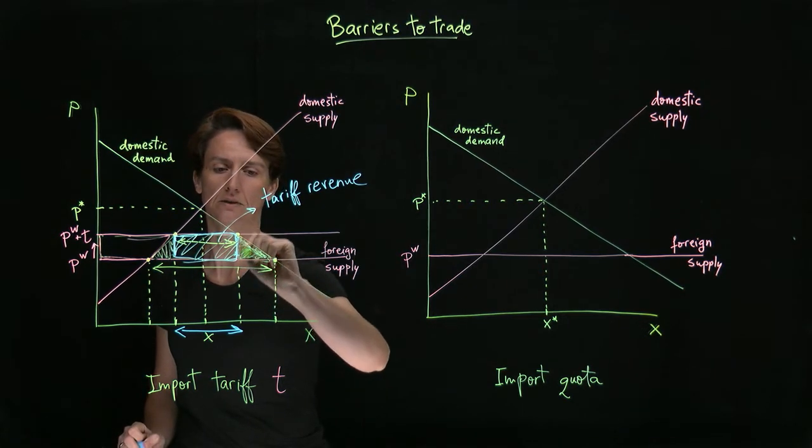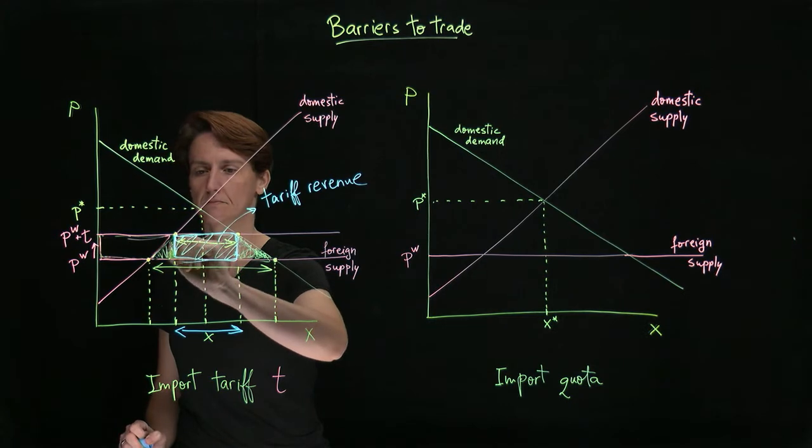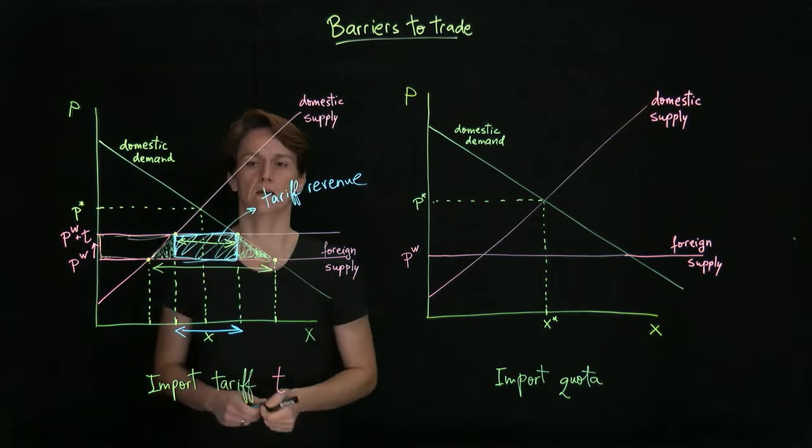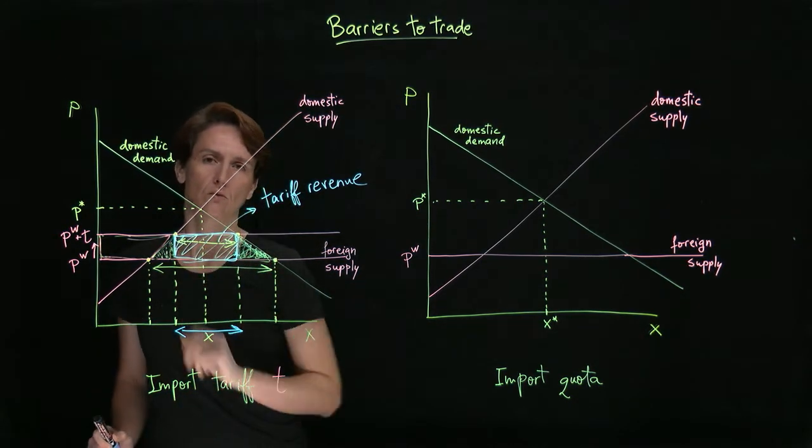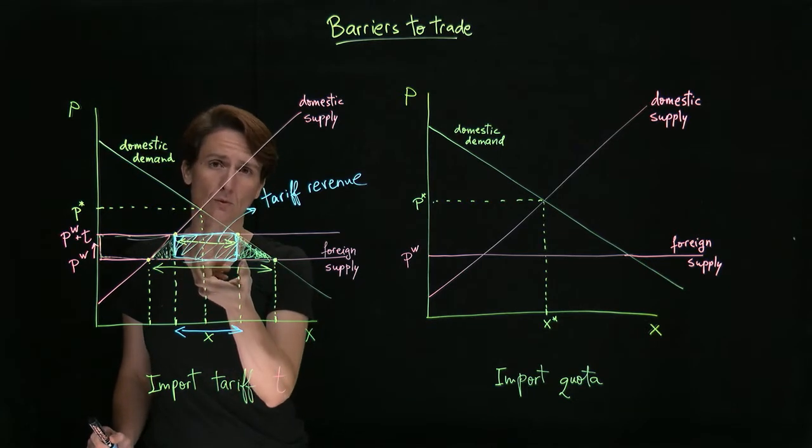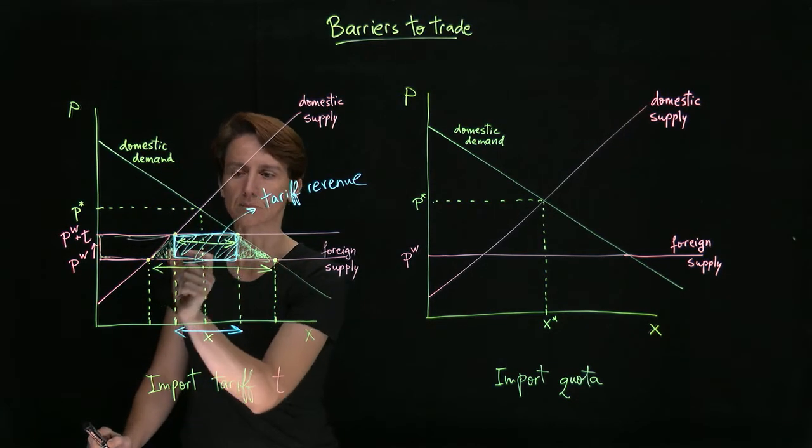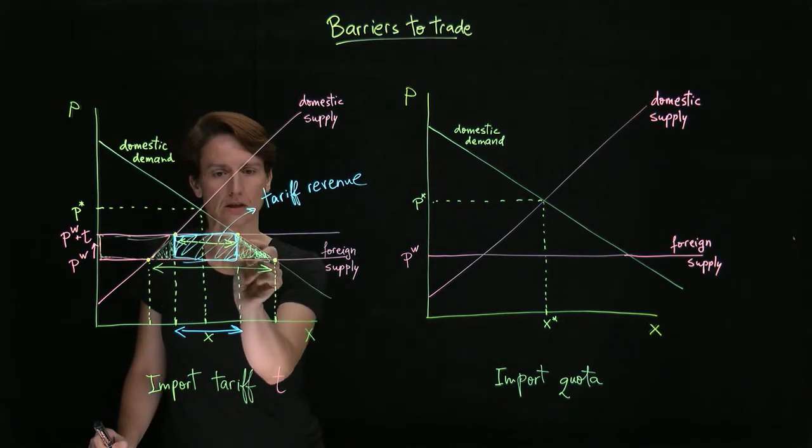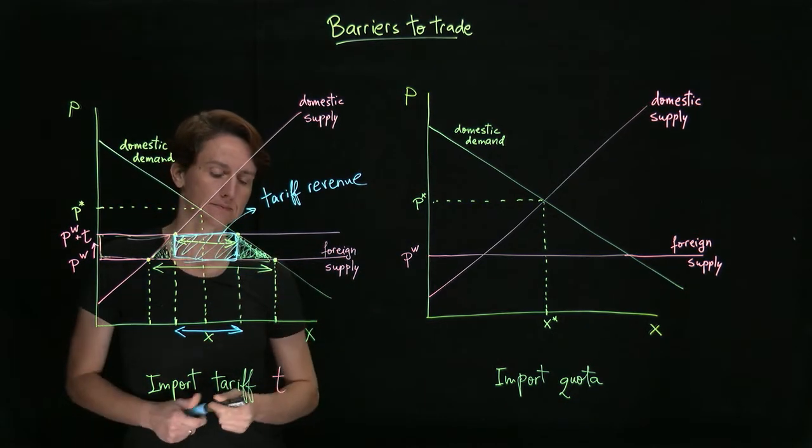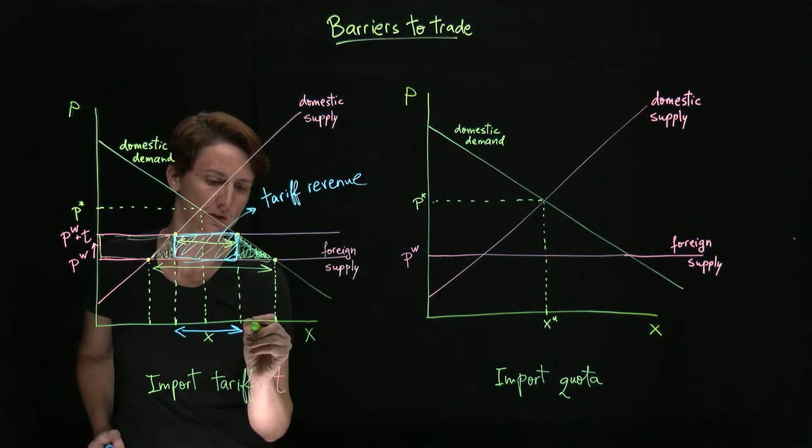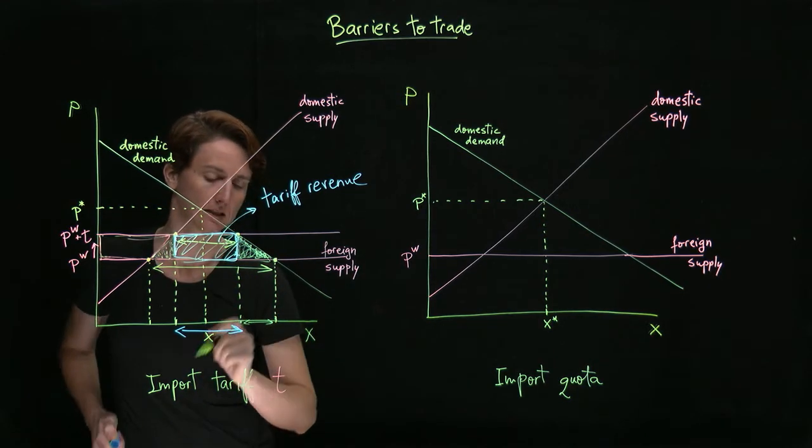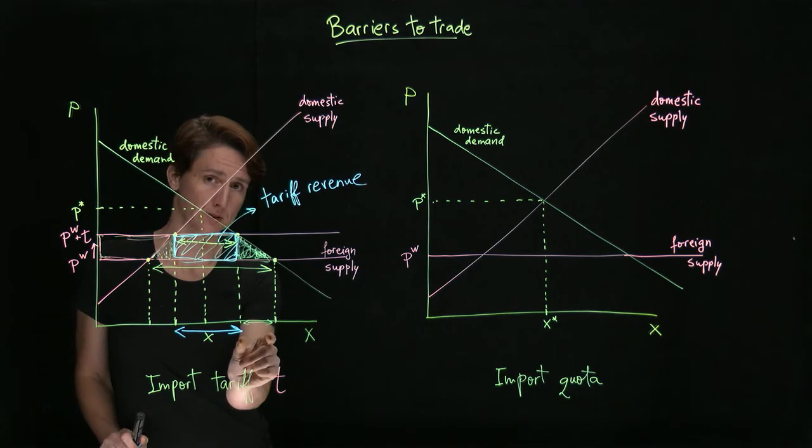Where do these come from? Why is there economic loss in this case? It actually helps to think of them separately. This small area is proportional to the number of units that the consumers no longer purchase.